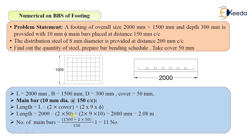We deduct 2 times 50mm cover because the bar length goes up to this point only, subtracting cover from both the left-hand side and right-hand side. We then add 2 times 9d for hook length, which is taken as 95mm — there are two such hooks. So: 2000 minus 2 times 50 plus 2 times 9 times 10 gives 2080mm, or 2.08 meters.